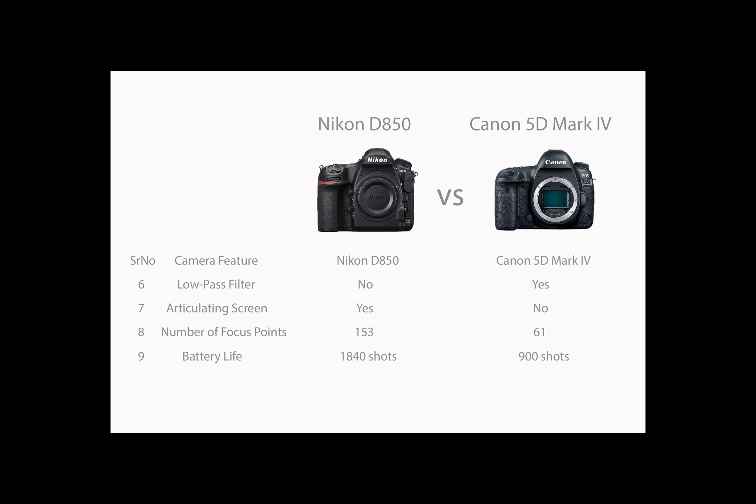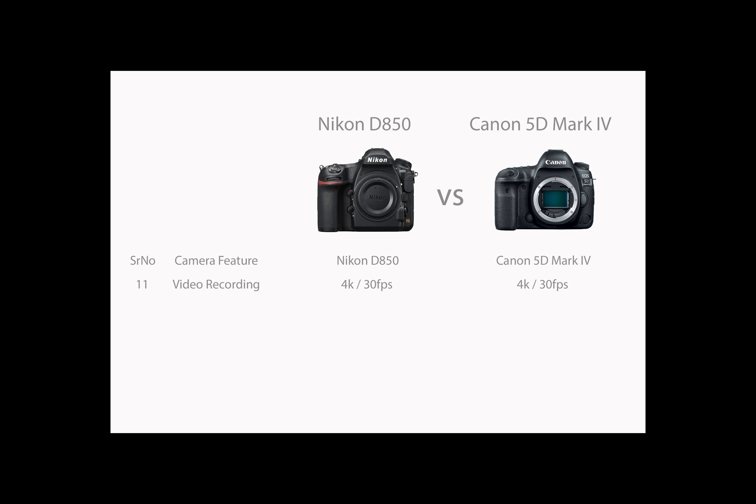Nikon D850 has far superior battery life compared to Canon 5D Mark IV. Canon 5D Mark IV's camera body is lightweight — it's 115 grams lighter than the Nikon D850. Both cameras shoot 4K at 30 frames per second and have the same recording features. Both camera bodies come at the same price range of $3,299.